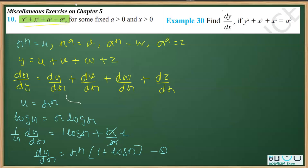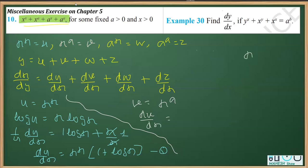Now for the next function: v = x raised to the power a. Its differentiation — no need to take log here. Applying the standard power rule, d/dx of x^n = n·x^(n-1), we get dv/dx = a·x^(a-1). This is equation 2.